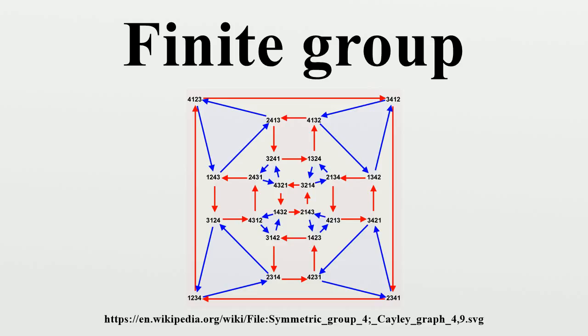The classification of finite simple groups. Inspection of the list of finite simple groups shows that groups of Lie type over a finite field include all the finite simple groups other than the cyclic groups, the alternating groups, the Tits group, and the 26 sporadic simple groups.